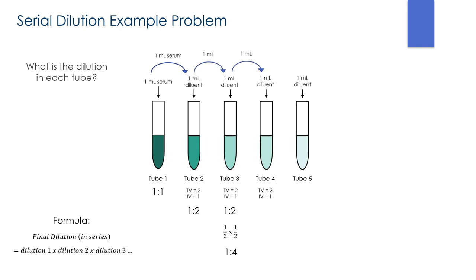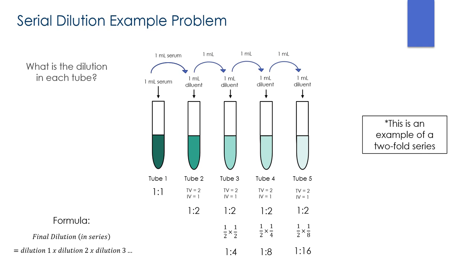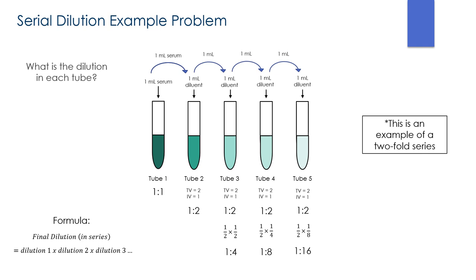For tube 5: 1:2 × 1:8 = 1:16. This is a two-fold series. After transferring 1 mL from tube 4 to tube 5, we want all tubes to contain the same volume, so discard 1 mL from the last tube.